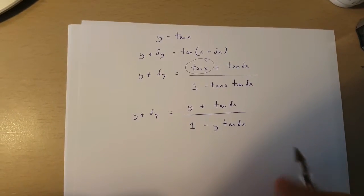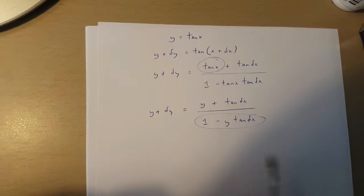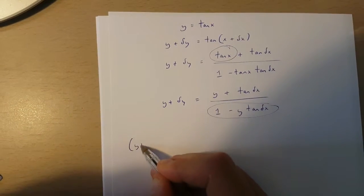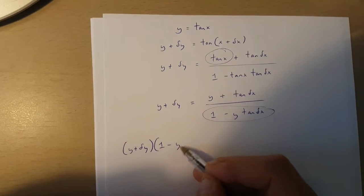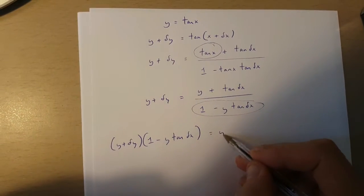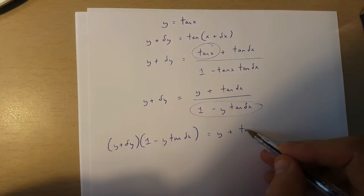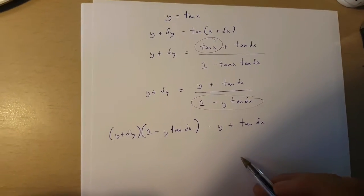Now if we multiply both sides of this equation by this over here, what we're going to get is y plus change in y times 1 minus y times tan change in x is equal to y plus tan change in x.